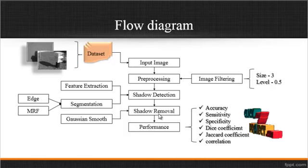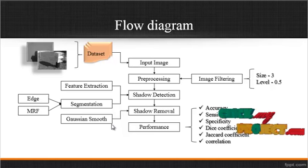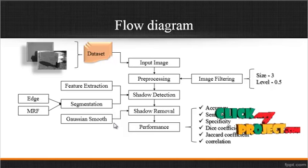After shadow detection, shadow removal is done by Gaussian smoothing. In this step, we eliminate the shadow regions by enhancing the contrast level of the pixels.